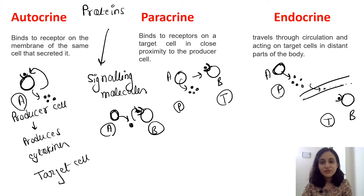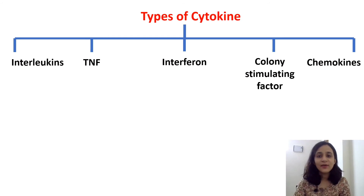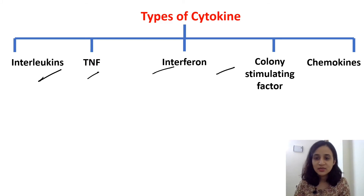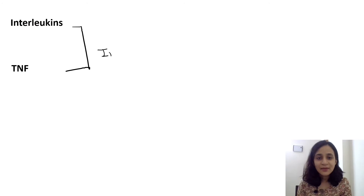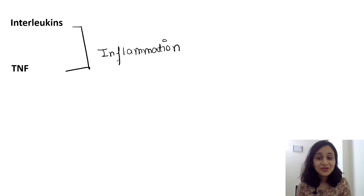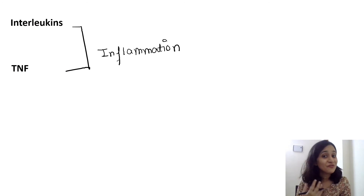These are the three ways cytokines work. Different types of cytokines include: interleukin, TNF or tumor necrosis factor, interferon, colony stimulating factor, and chemokines — each with different functions, which we will discuss one by one. First, interleukin and TNF both mediate inflammation. This is their primary function, although they have other functions too. I will teach inflammation in detail in a future video, but for now just remember that these two cytokines mediate inflammation.